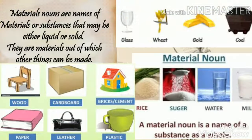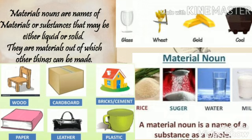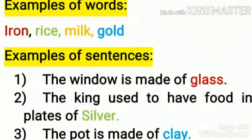Next, definition of material nouns. Material nouns are names of materials or substances that may be either liquid or solid. They are materials out of which other things can be made. For example: iron, rice, milk, gold. Gold is used to make ornaments, so gold is called a material noun. And milk is used to make butter, ghee and cheese, so milk is also called a material noun.